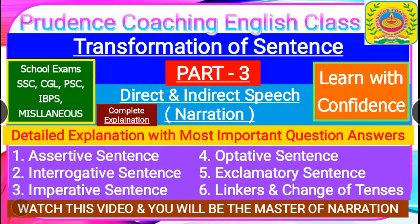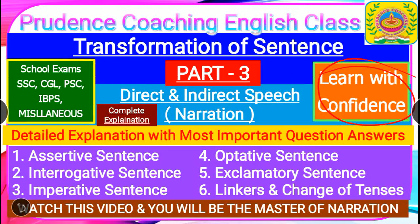Today we are going to discuss the detailed explanation for direct and indirect speech. We will give you all types of questions along with their answers and detailed explanations. After watching this video you need not watch any other content regarding transformation of sentence for direct and indirect speech. We will discuss assertive sentence, interrogative sentence, imperative sentence, optative sentence, exclamatory sentence, and the use of linkers and change of tenses for direct and indirect speech.